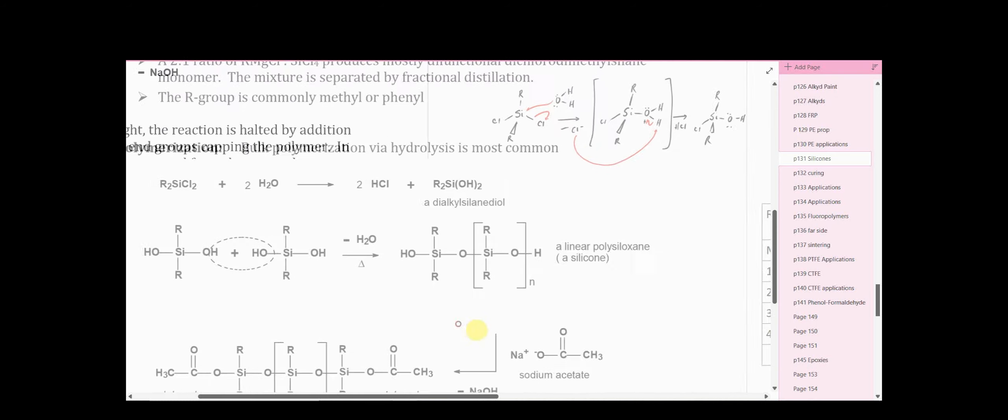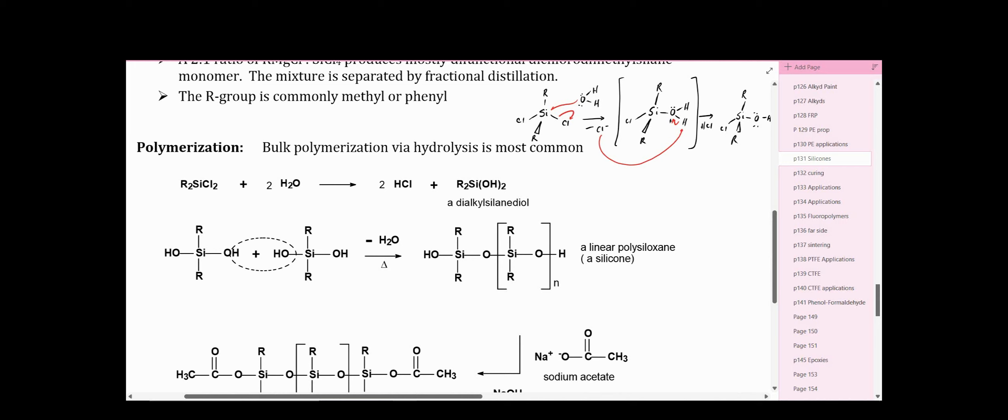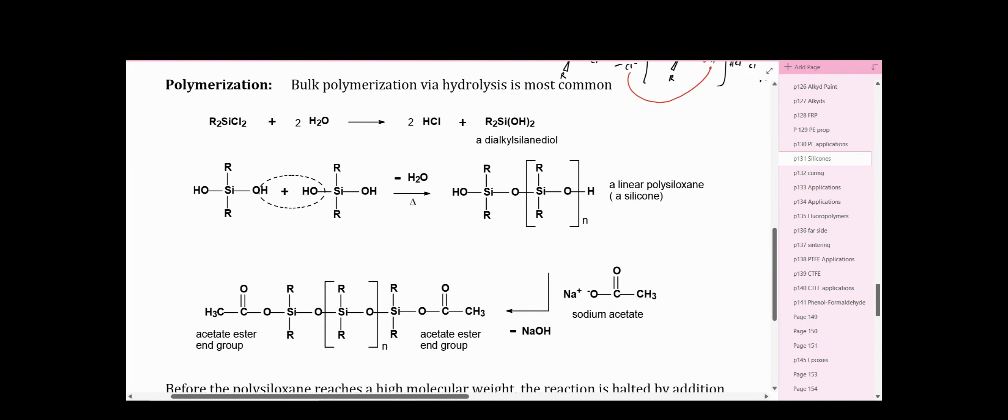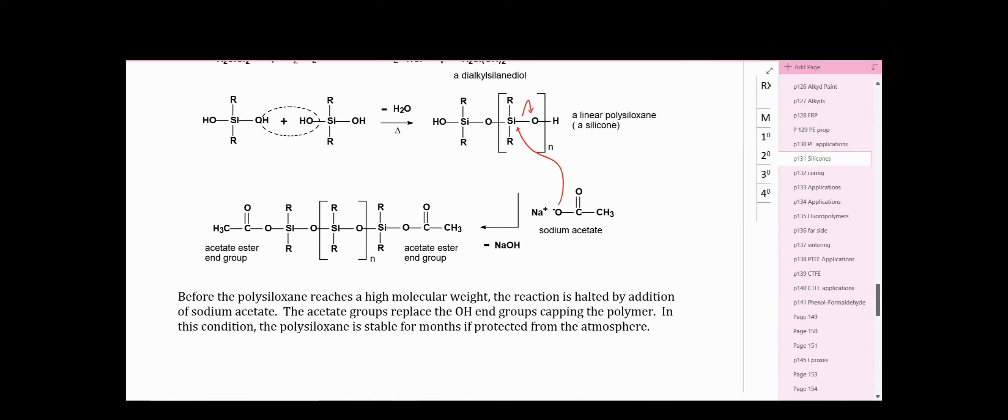Now, in order to use this, we want to stop the polymerization, at least the manufacturer does, and put it in a tube and send it to us so that we can complete the polymerization in our application. We don't want to buy the rubber, we want to buy the gel liquid that we can squeeze out of the tube. So he caps it using sodium acetate. At some point in the polymerization, polymerization is stopped by adding sodium acetate which will cap these end silanol groups - just again a substitution reaction giving us acetate end groups, and that stops the polymerization.